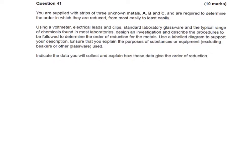We're also told that we must use a labeled diagram to support the description, and then we're told that we've got to explain why we've used particular substances and equipment, and indicate what data we're going to collect, and explain how that data will give the order of reduction. So the question is indicating many things that we've got to provide, and in the 10 marks, we can see that some of those marks will be allocated to each of the things which we've been told to do.